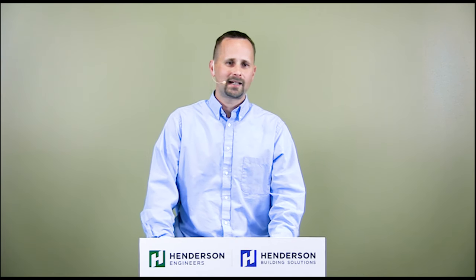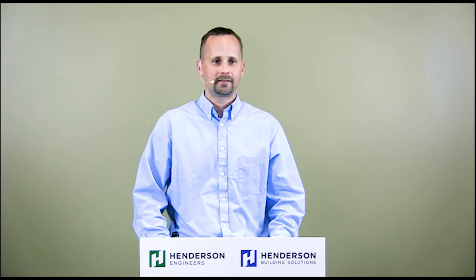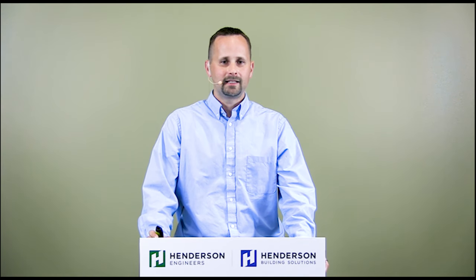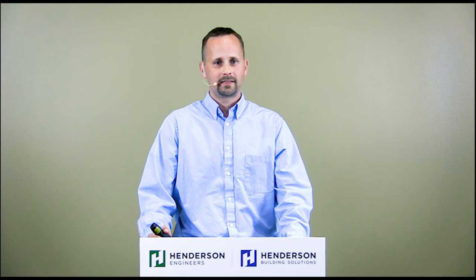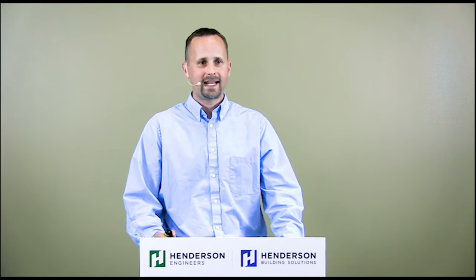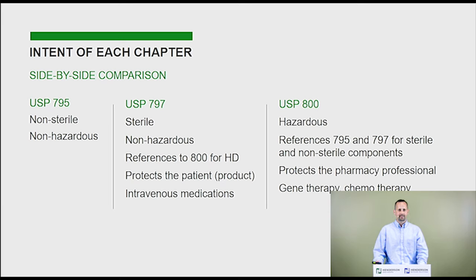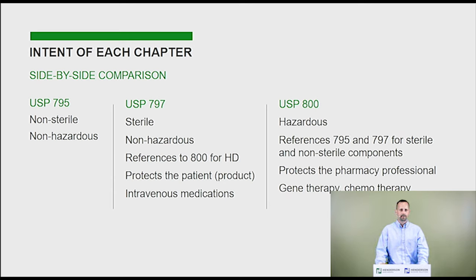Each of these standards has a specific reason and a specific case where they need to be implemented. USP 795 is for non-sterile, non-hazardous drugs — compounding, pill counting, pill crushing on items that are not considered hazardous. It doesn't have to be in a clean room, but it has to be on a counter in an area segregated from general traffic with decent lighting and HVAC. USP 797 is for sterile drugs; it refers to non-hazardous drugs, but all the requirements in 797 can also apply to hazardous drugs that are sterile as well.